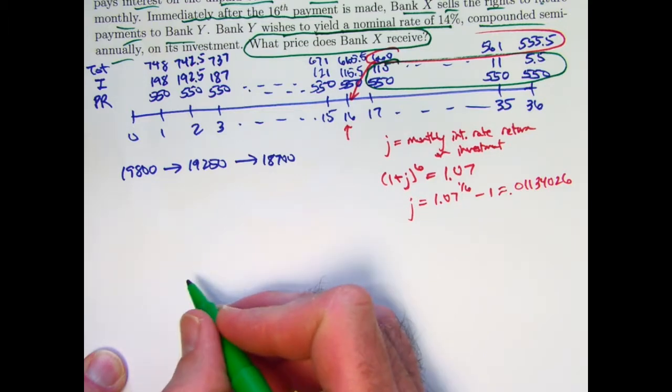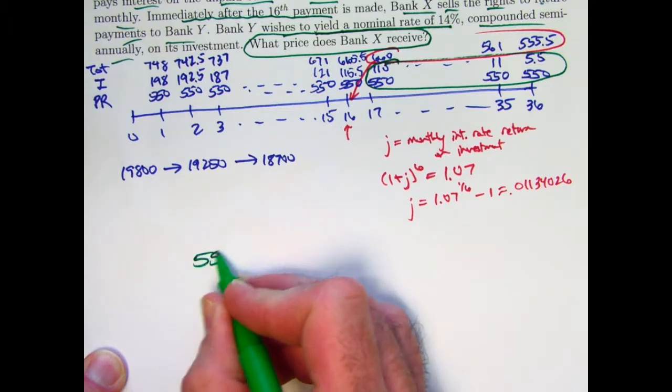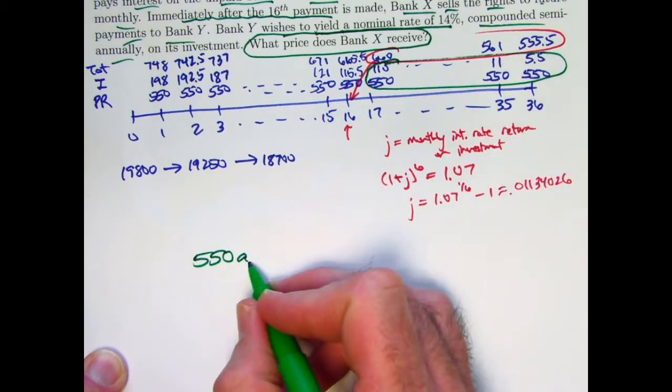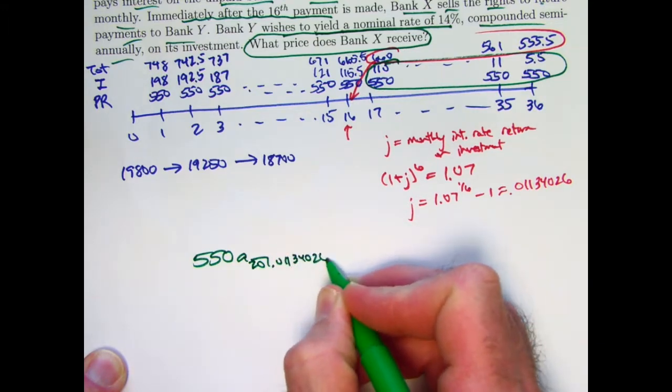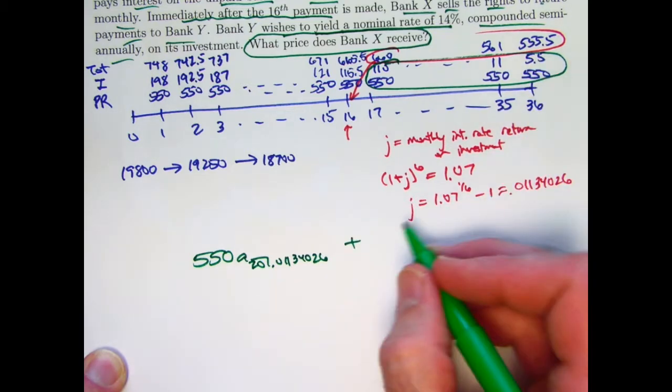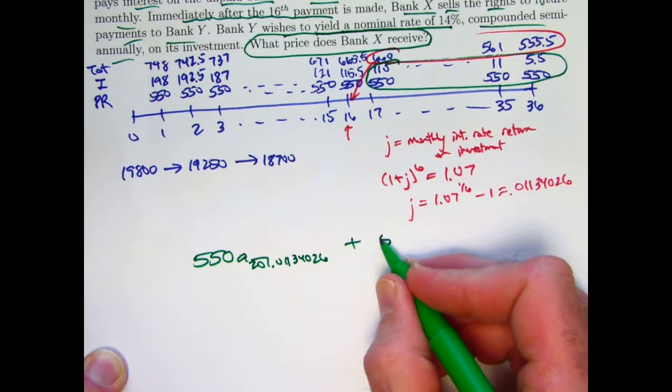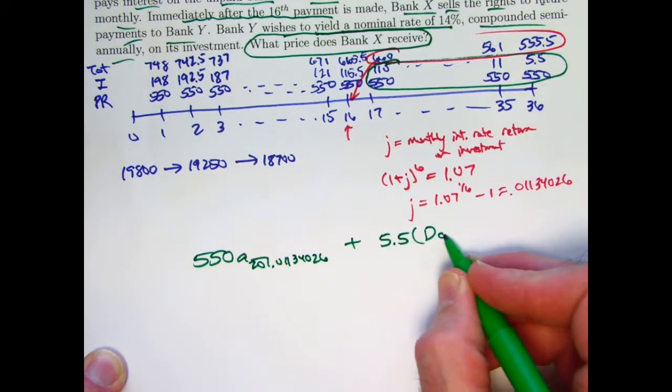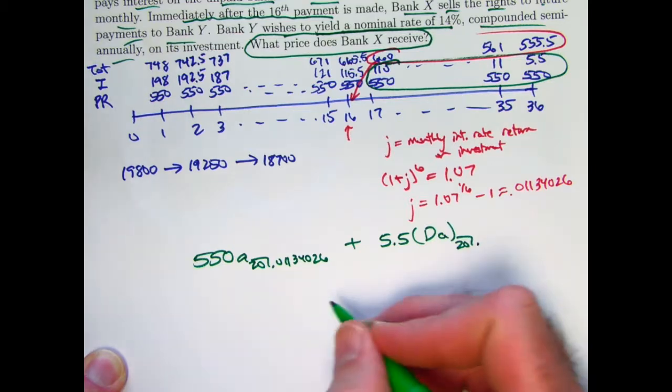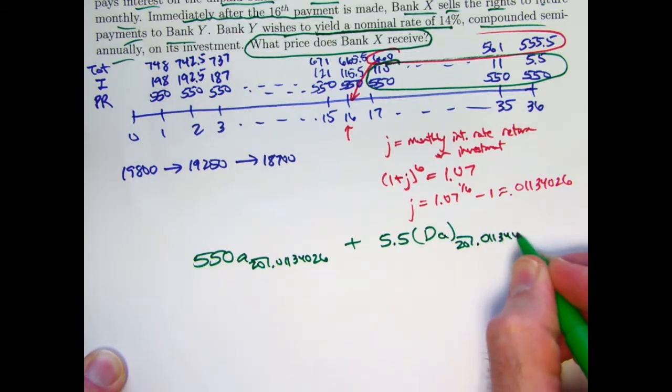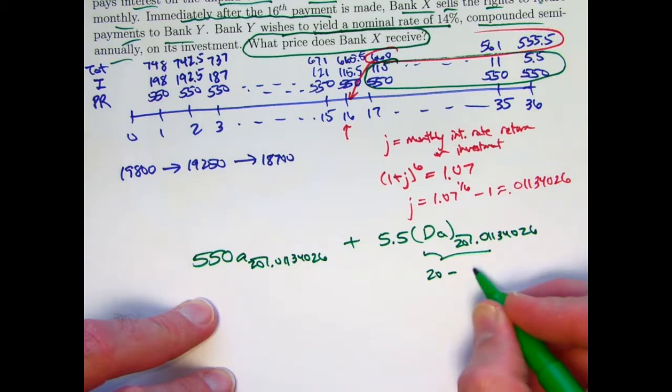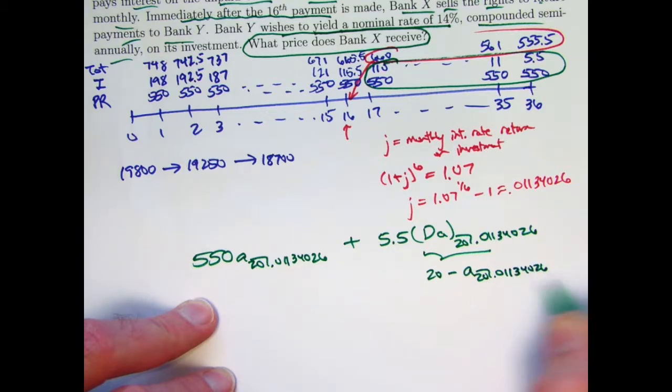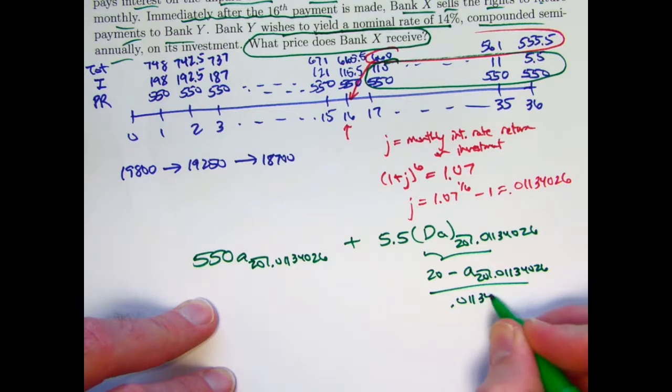So what I need to figure out here then is going to be 550 times A, how many payments are left here? There's 20 payments left with this monthly interest rate, 0.01134026. And then the other payment stream is a decreasing one with factor 5.5, 5.5 DA sub 20 with this monthly interest rate of 0.01134026. The formula for this thing is N, which is 20, minus AN with the same interest rate, divided by I, which is 0.01134026. So now let's figure out the A.